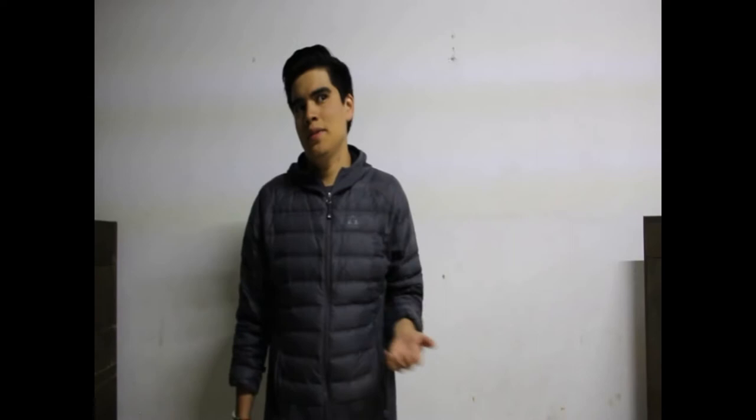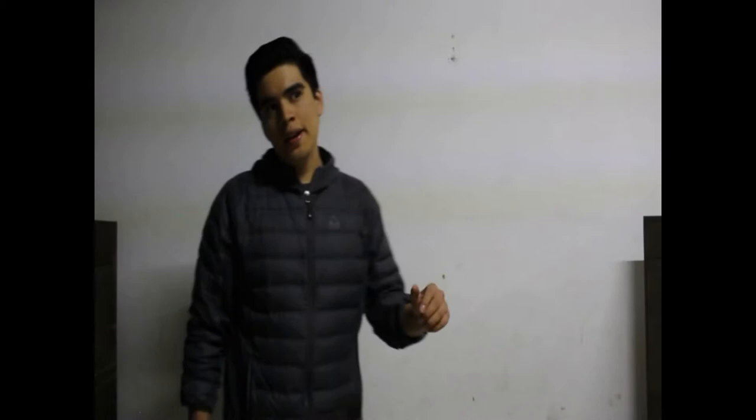Classification by order: the classification by order is determined by the greatest derivative present in the differential equation. If the greatest derivative is first or second order, it is classified accordingly. If the major derivative is a third derivative, then it is third order. In summary, the order is determined by the function that has to be derived the most times. Differential equations of second order and above are considered higher order.